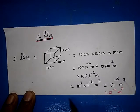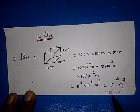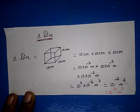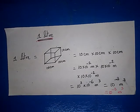So 1 litre is equal to 10 power minus 3 metre cube. Thank you.